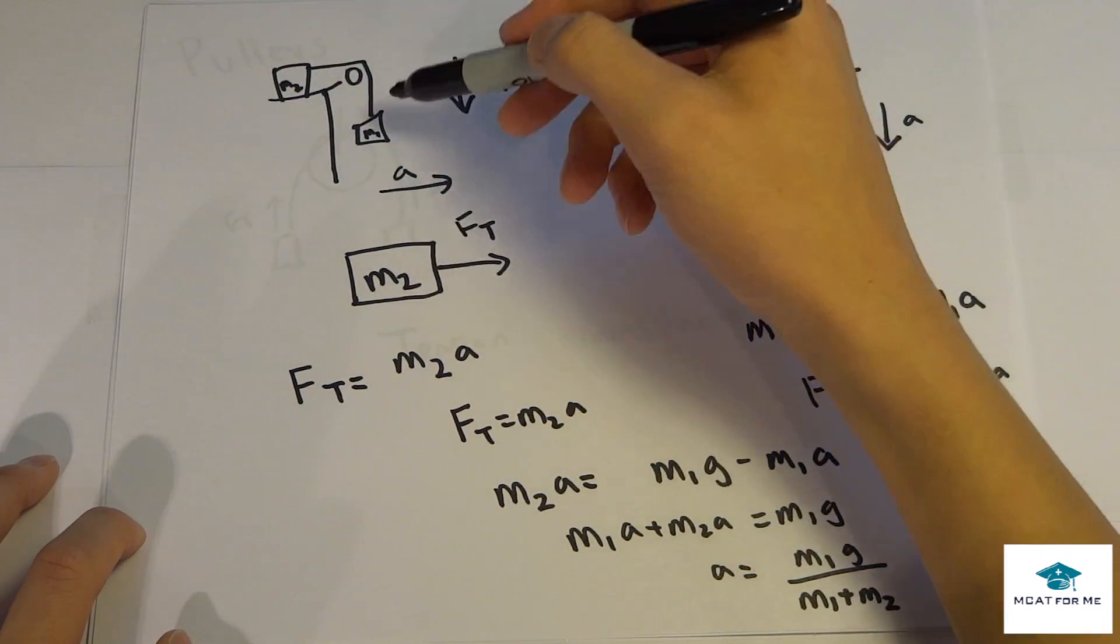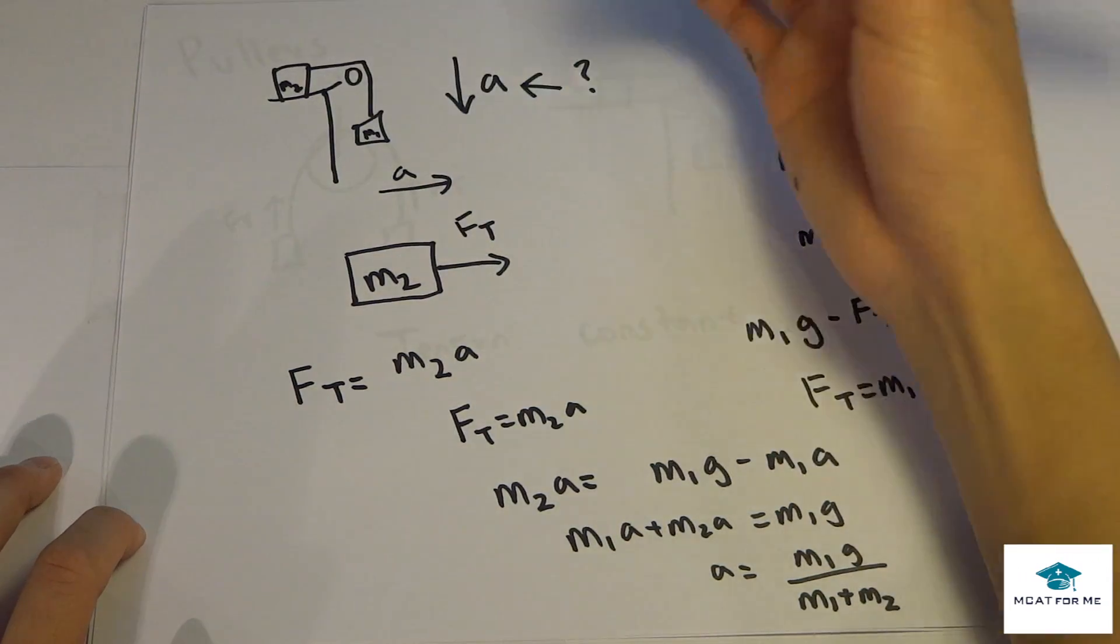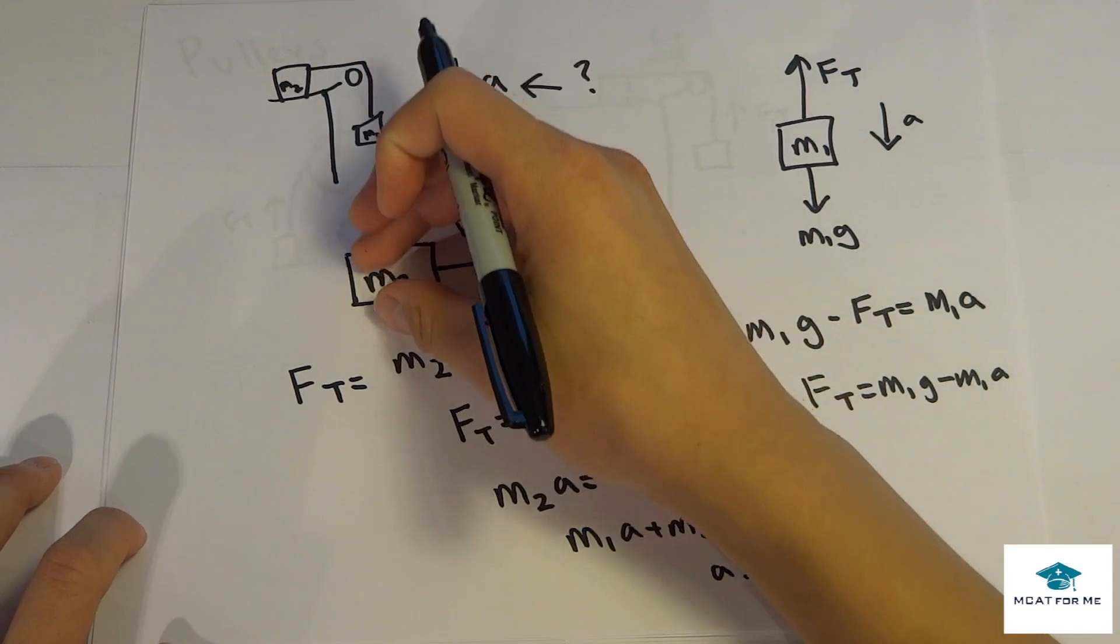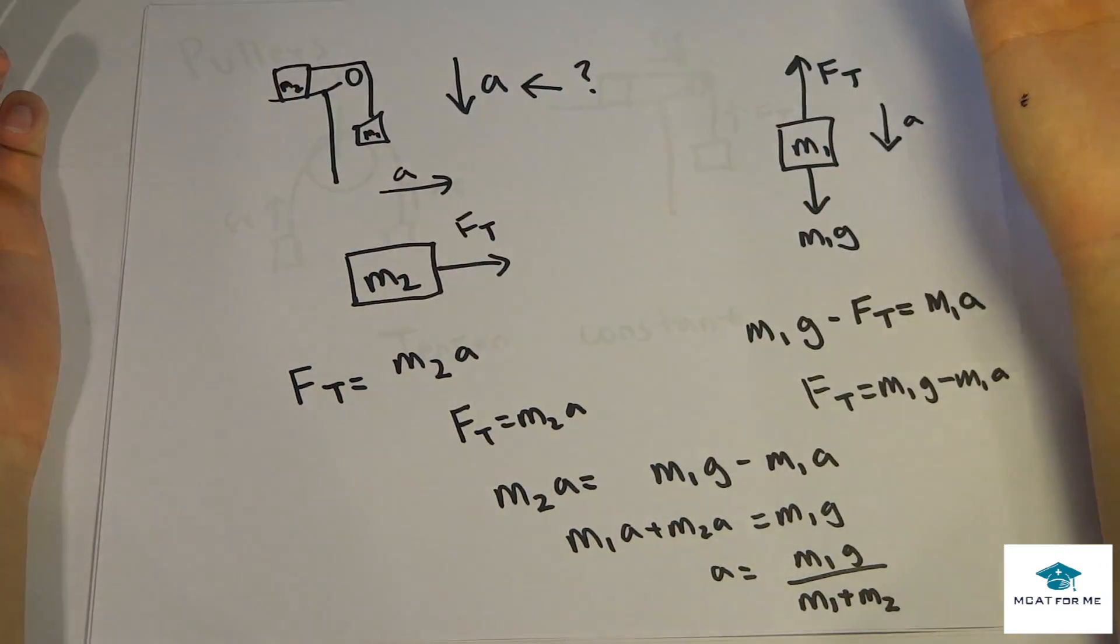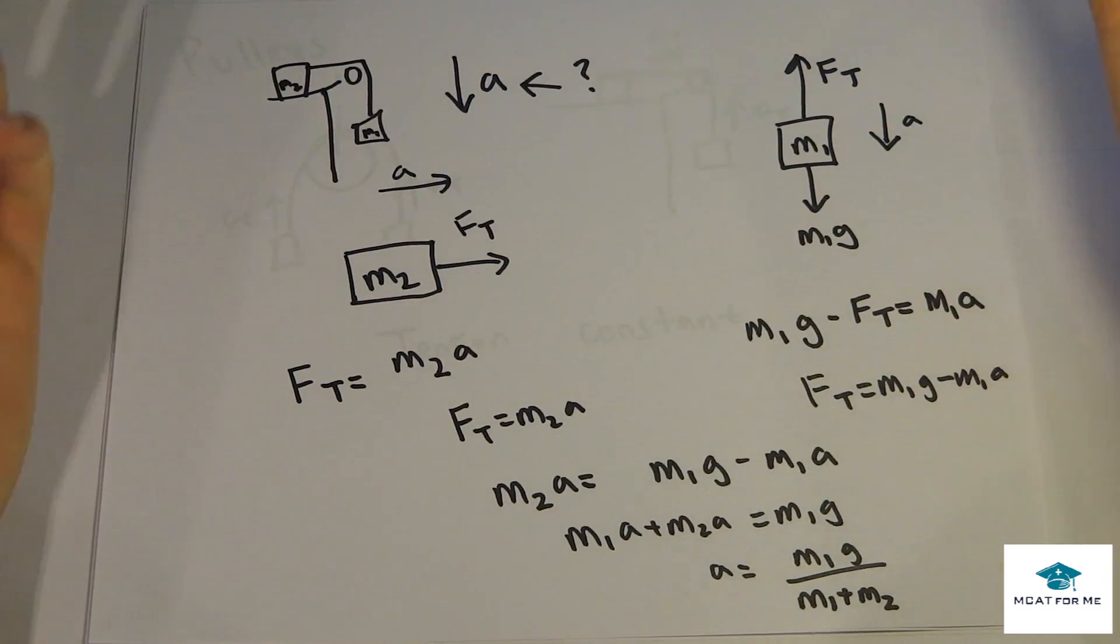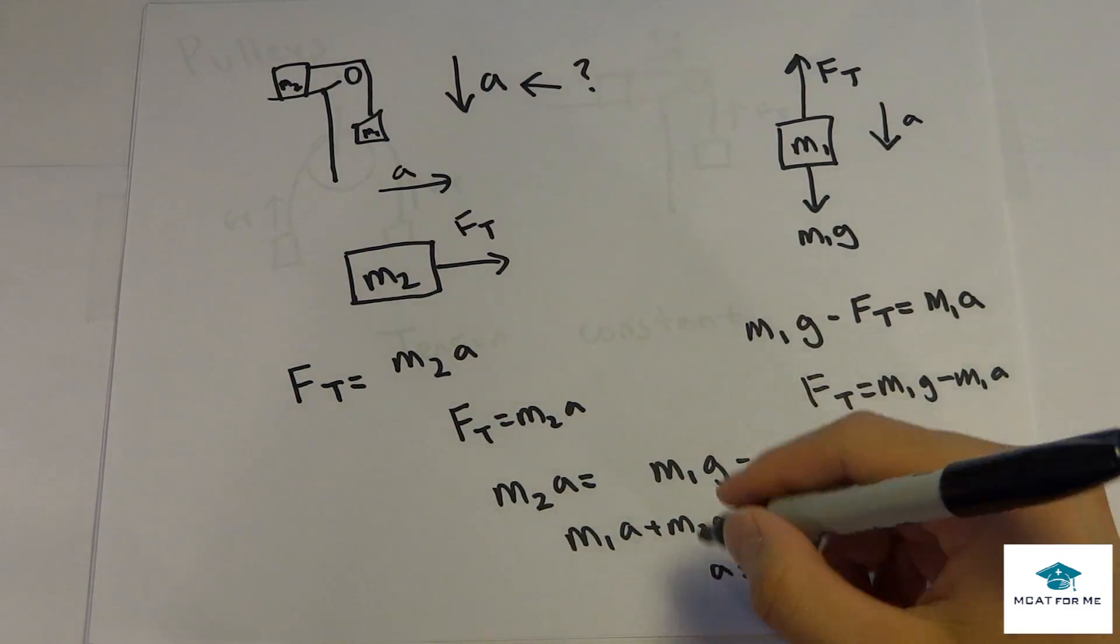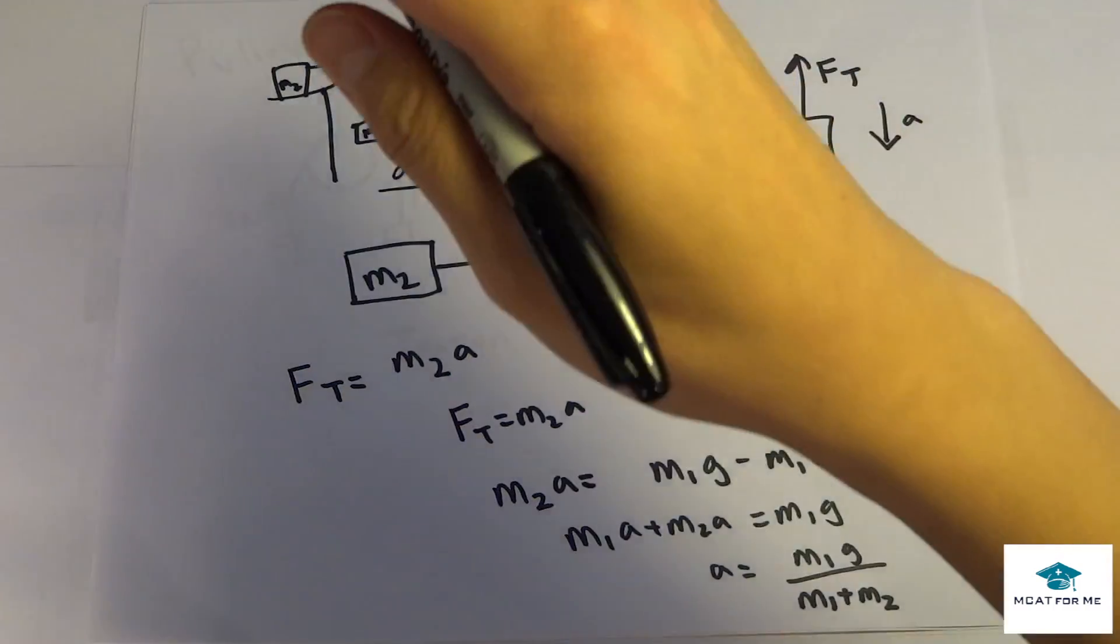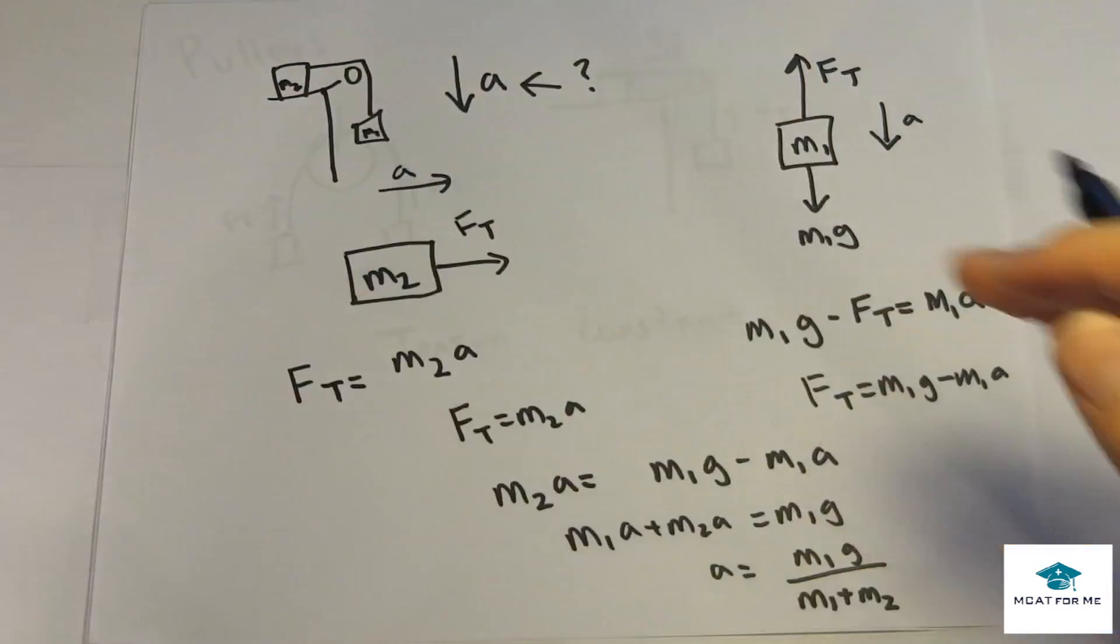And we know that both of them have to have that same acceleration, because if you didn't, one object would be pulling the other, and you would just have tons of slack, or it would be physically impossible if you had any other way. So the acceleration is going to be constant throughout the whole thing, and the tension is going to be the same in the entire rope.